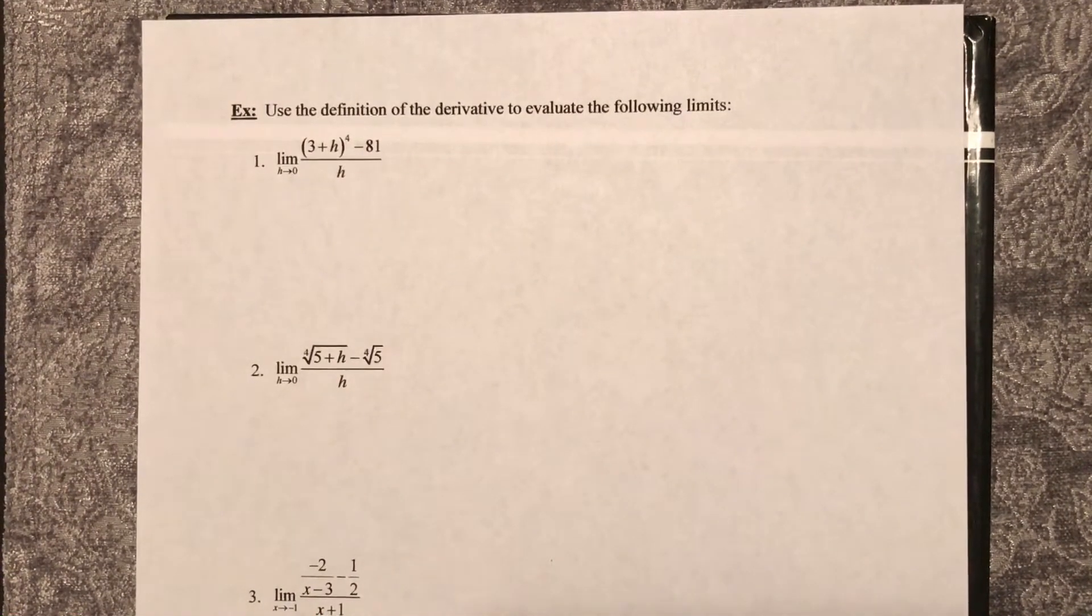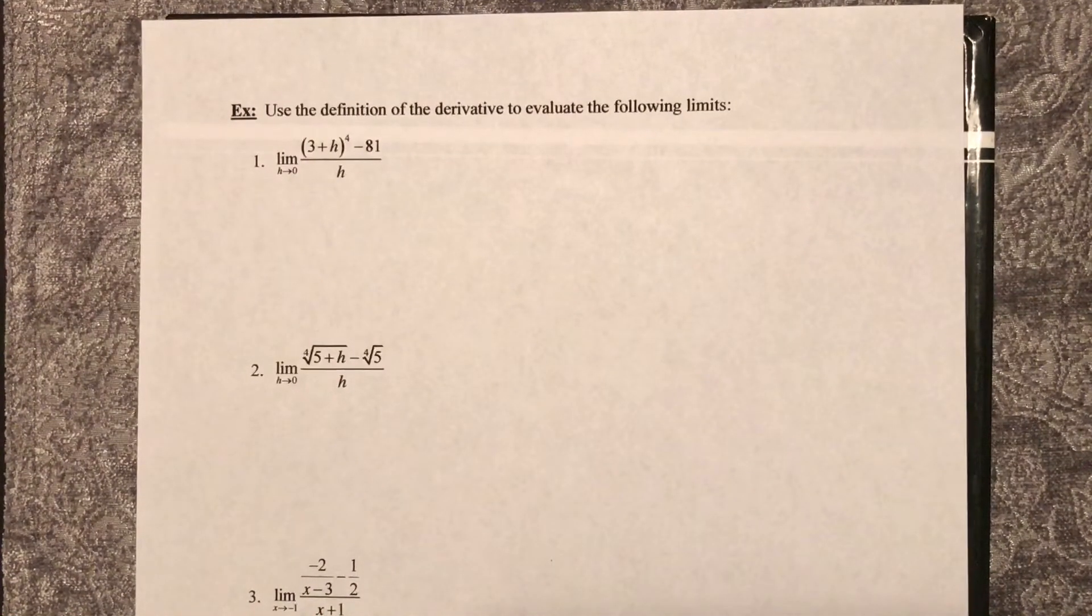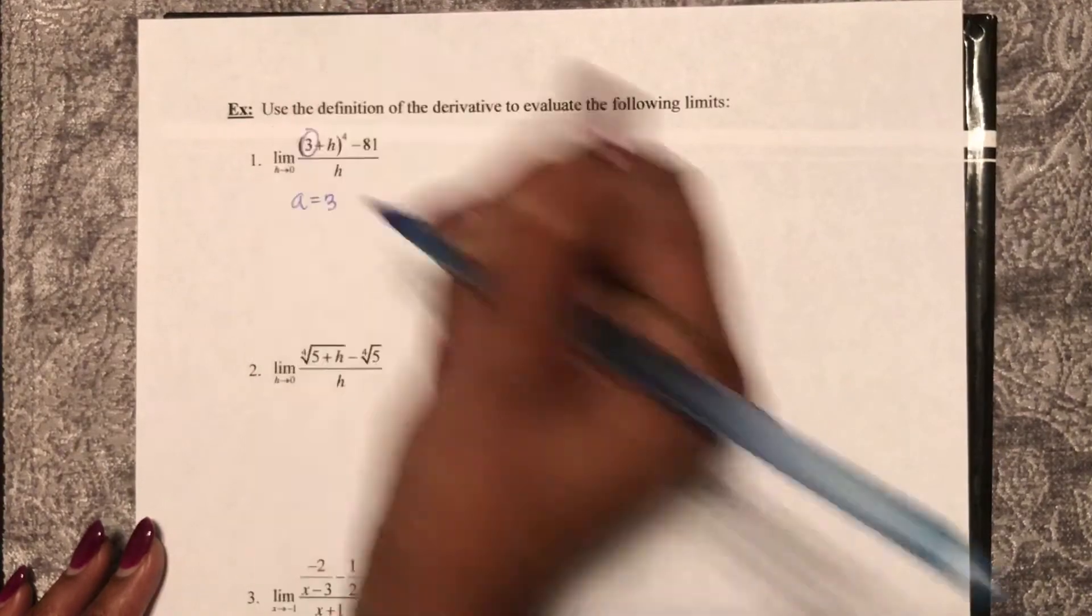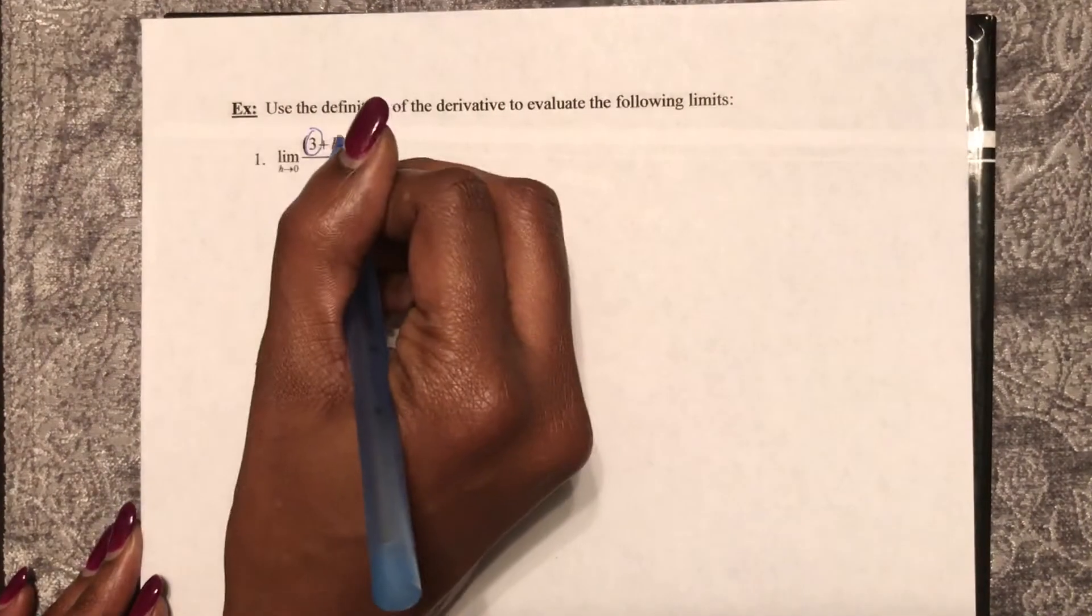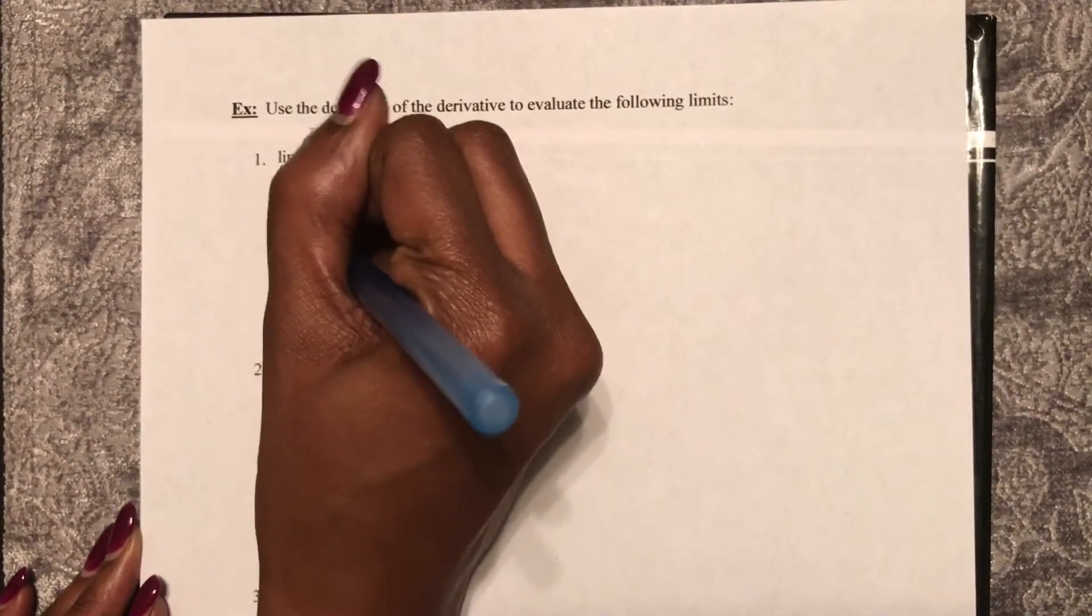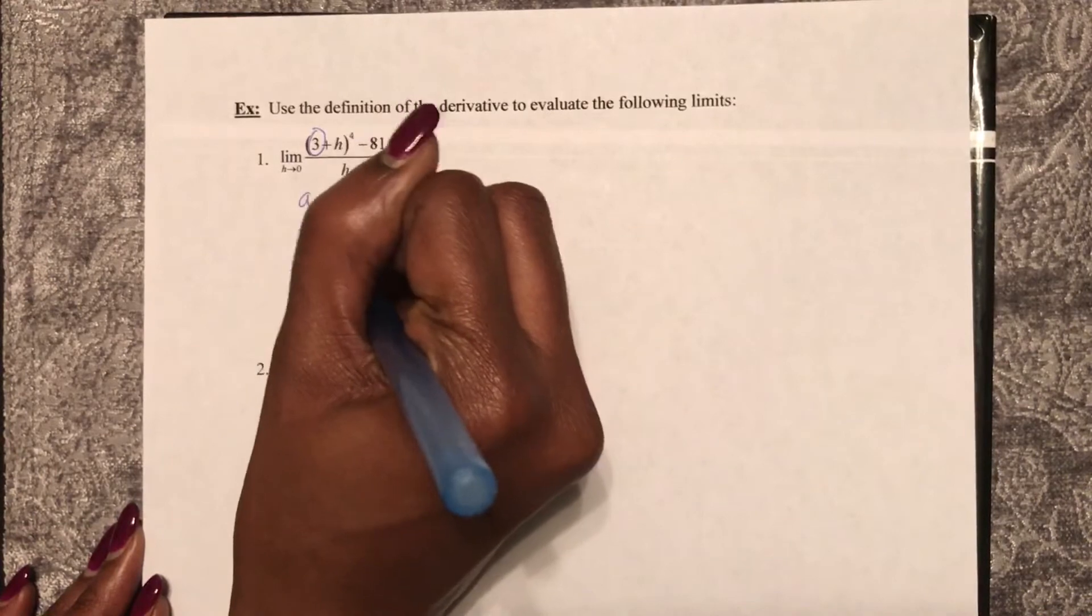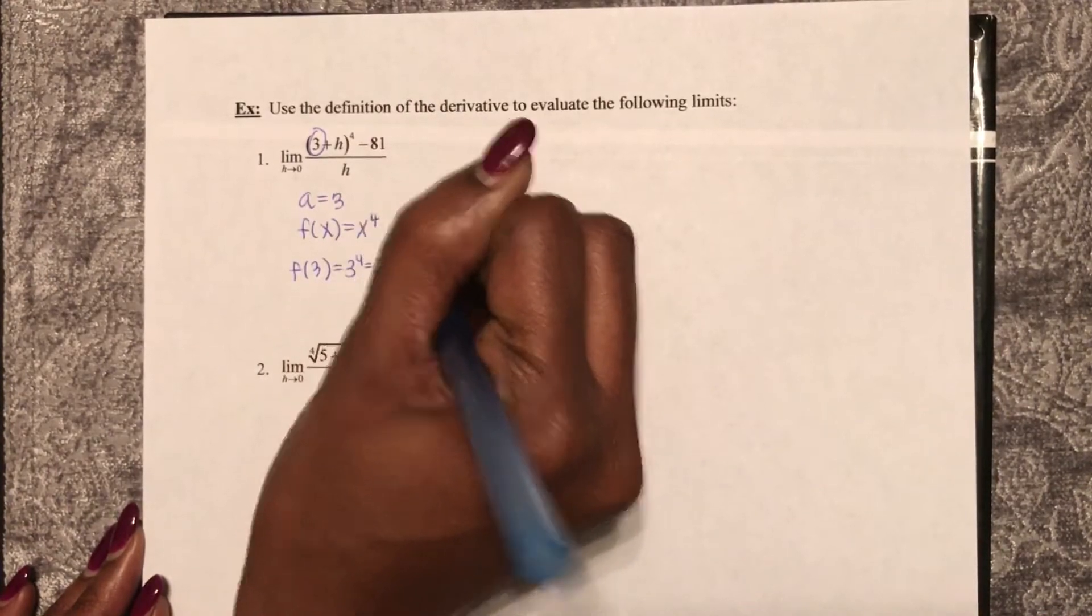All right, let's wrap up 2.5 connecting the limit definition to a derivative. So once again, we're looking directly to see what is a and what is the derivative. So here I say a equals 3. And if this is x, then f of x equals x to the 4th. So let me check. f of 3 is 3 to the 4th, which is 81. Check.